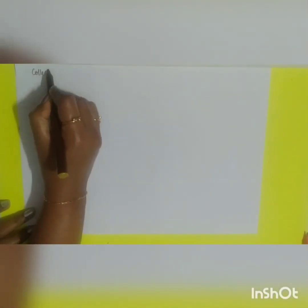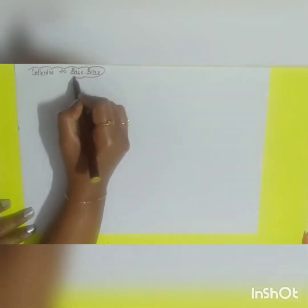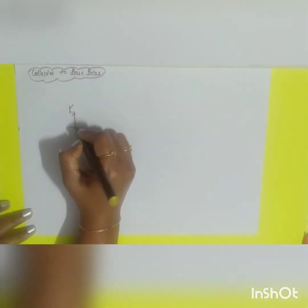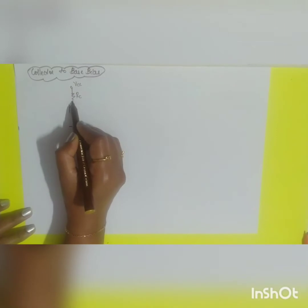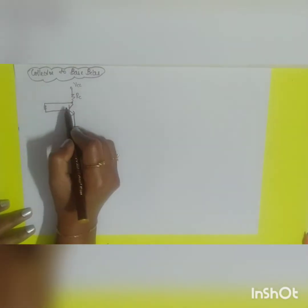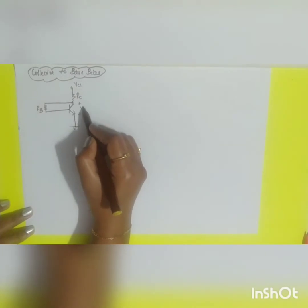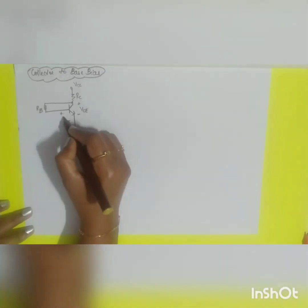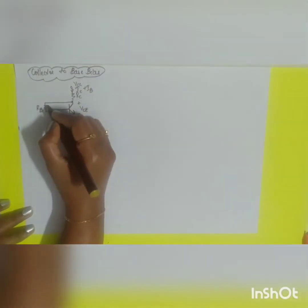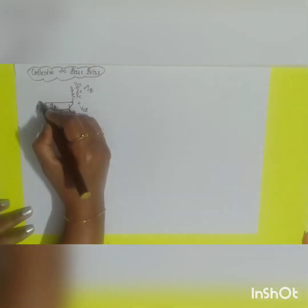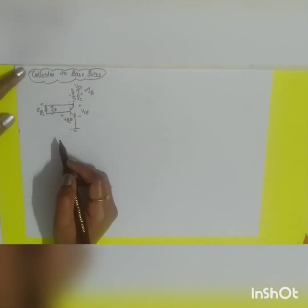The next type is collector-to-base bias. In this configuration the emitter is grounded, RC connects to VCC, and RB is connected from the collector to the base. The supply to the base is VCE, and the current flowing through RC is the sum of IC and IB, with IB flowing into the base.